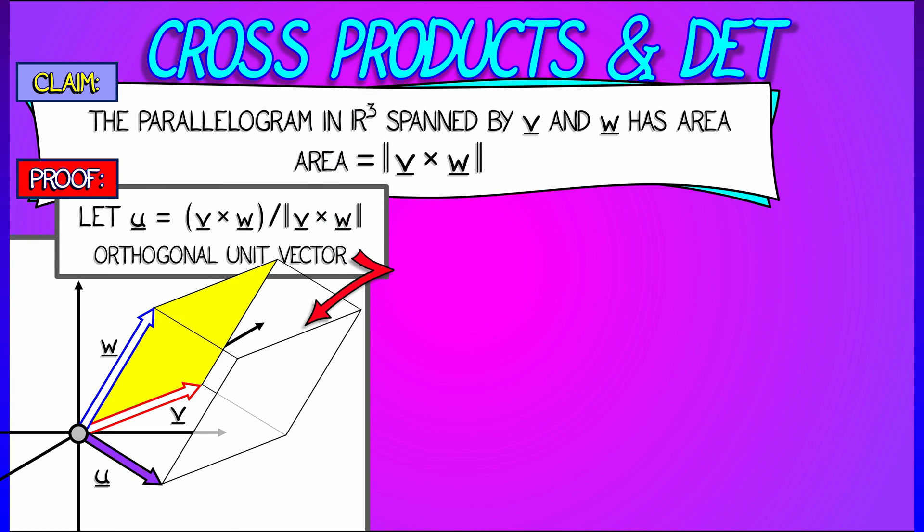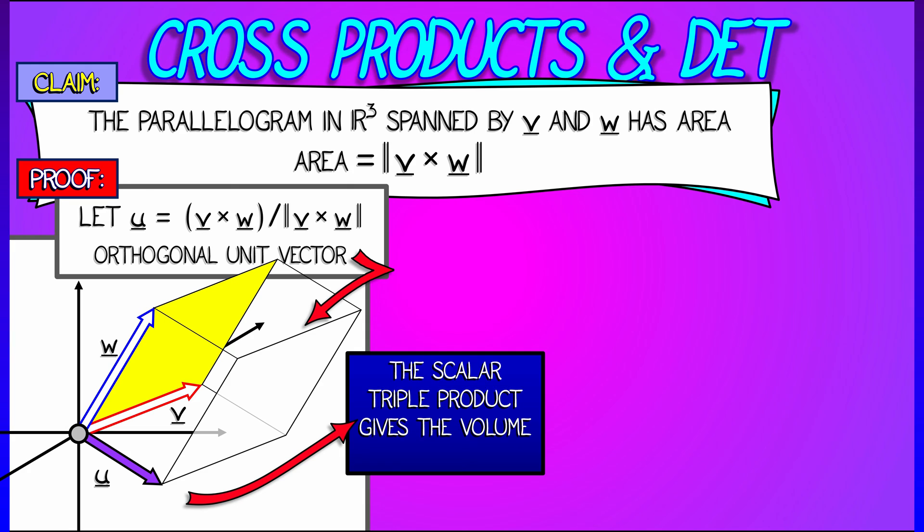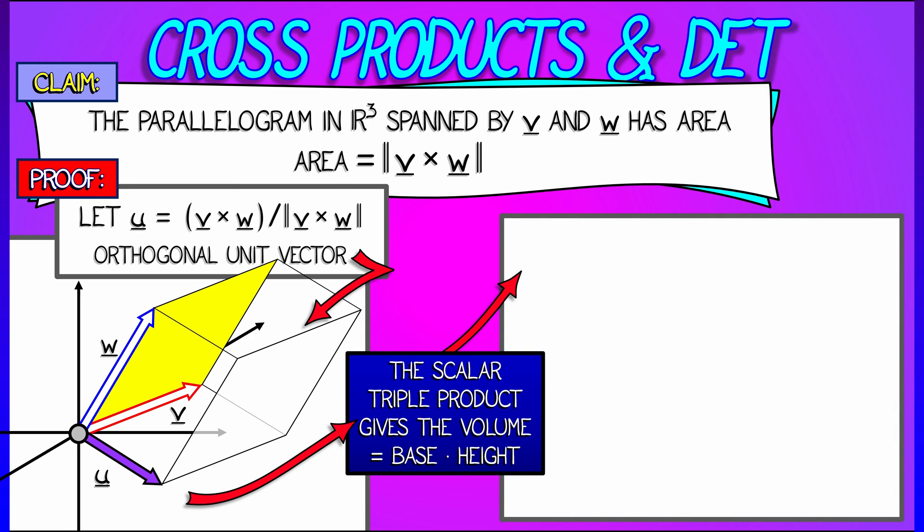That gives, as we know now, an orthogonal vector, and in this case, an orthogonal unit vector to that parallelogram. Together, these three span a parallelepiped. The scalar triple product gives the volume of this. That is, the area of the base parallelogram times the height, but that height is one.